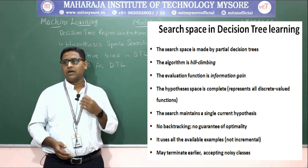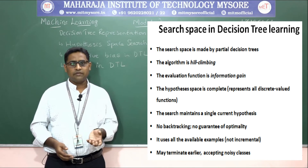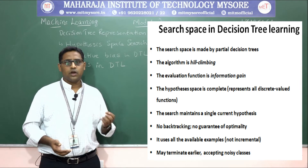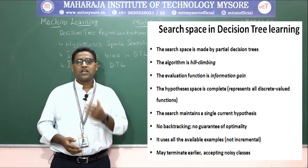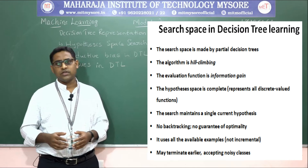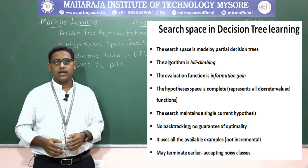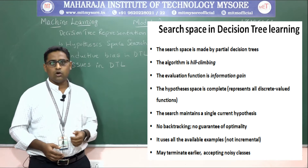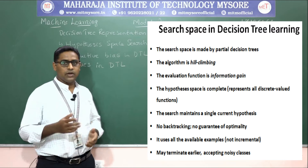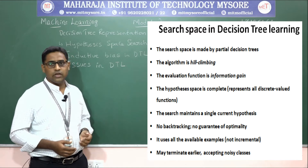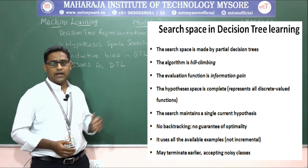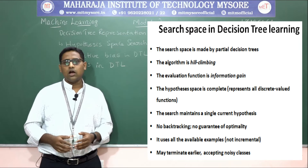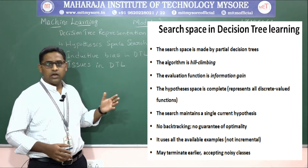The hypothesis space will be complete when it represents all discrete-valued functions, which are boolean functions — that is, true or false. The search maintains a single current hypothesis with no backtracking, so there is no guarantee for optimality. It uses all available training examples and is not incremental.